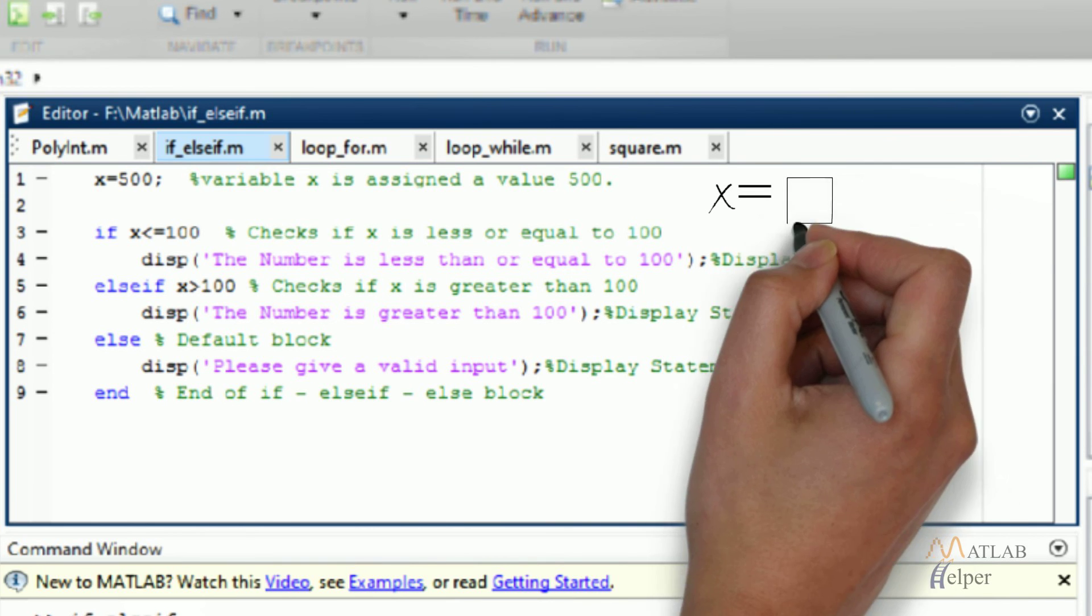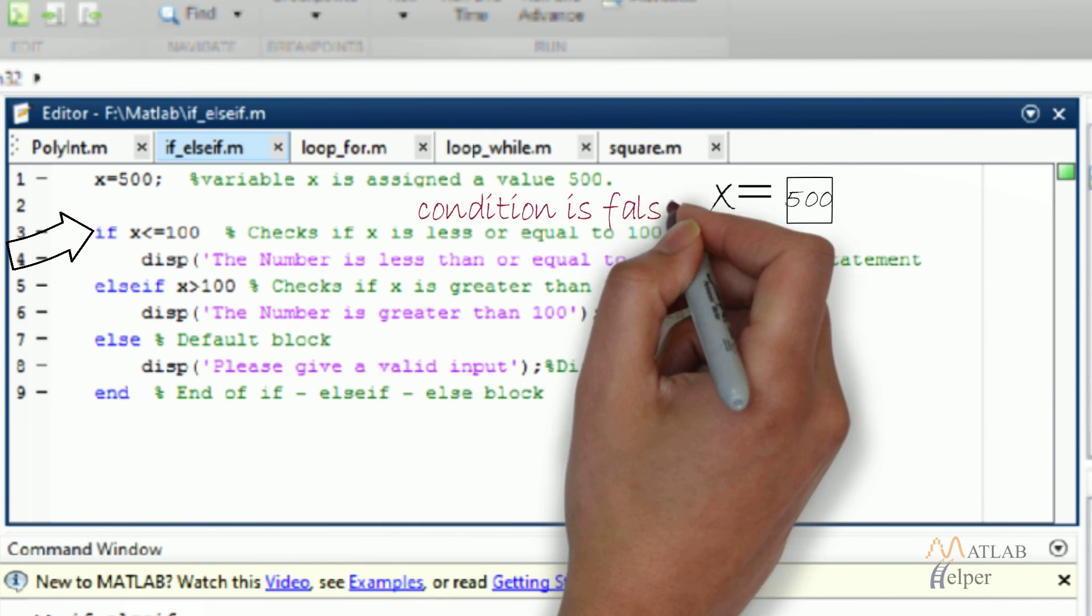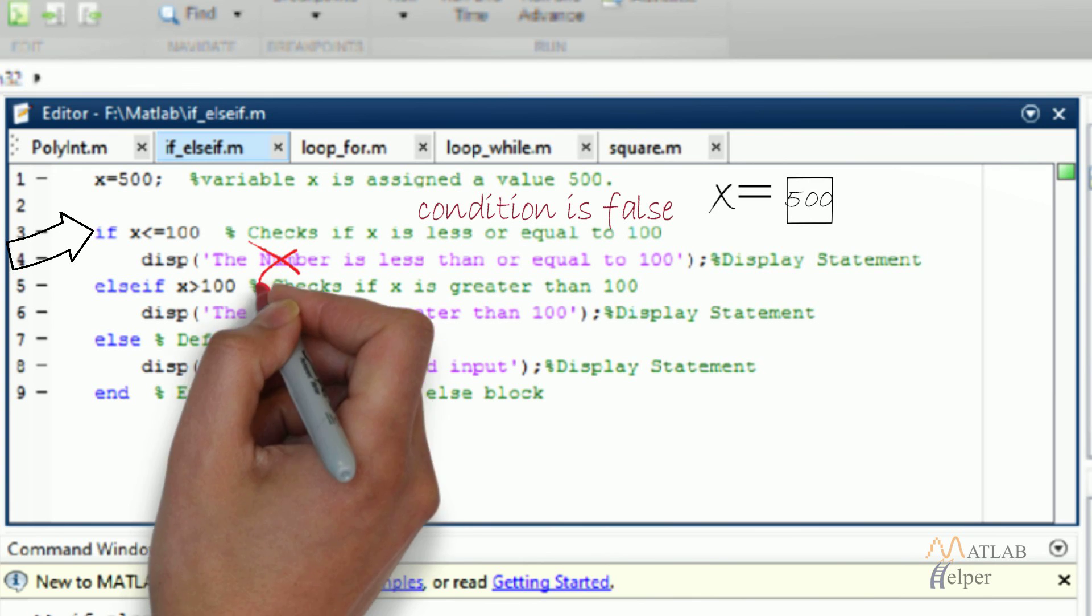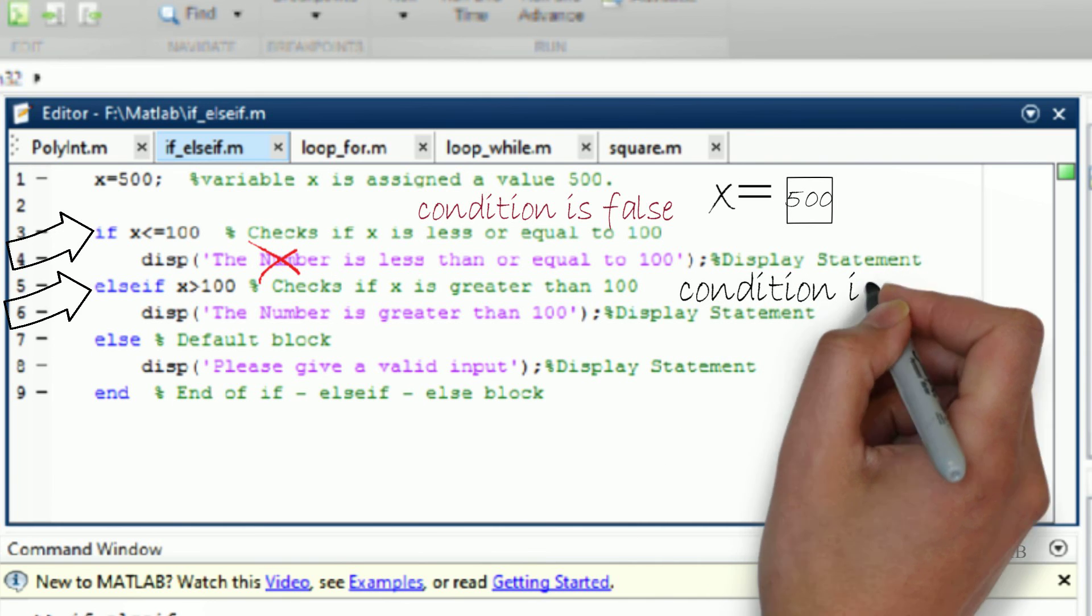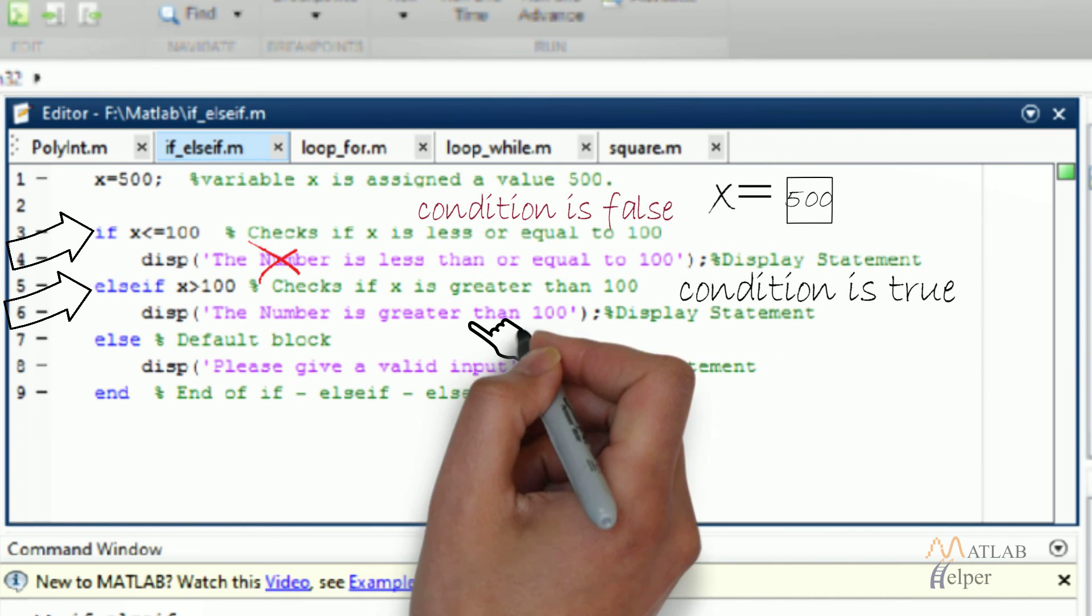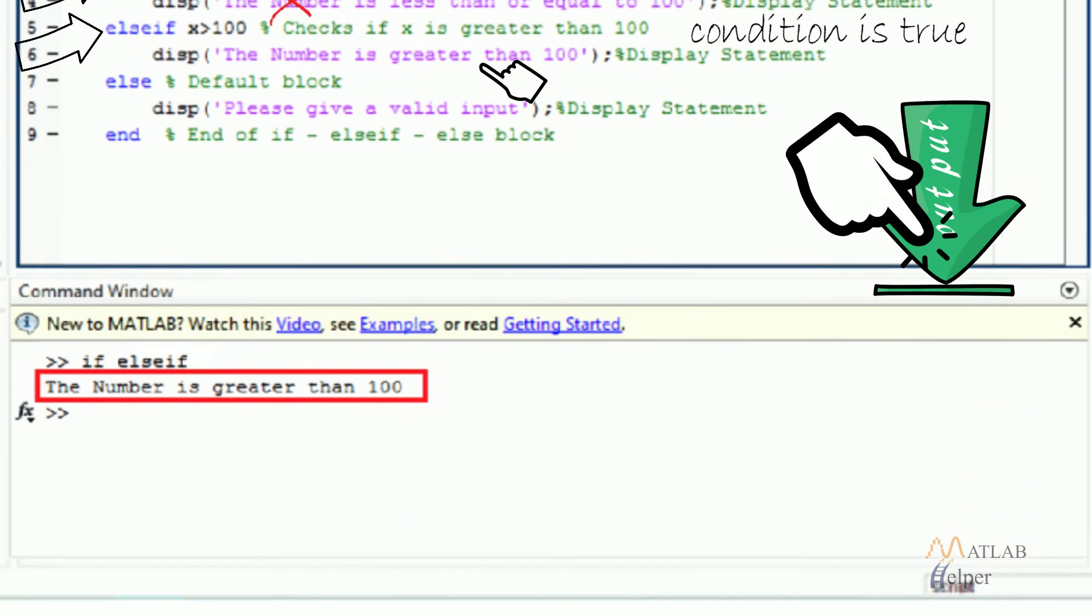In the given example, the value of x is 500. First, the condition if x is less than 100 is checked. Since it is false, the statement within the if block won't be displayed. Now the else if condition x greater than 100 is checked. Since it is true, the statement within the else if block will be displayed, as can be seen in the output.